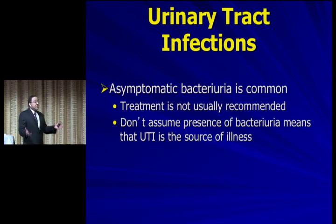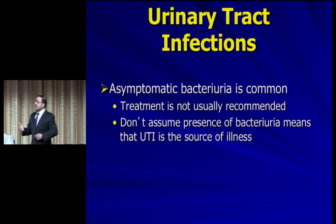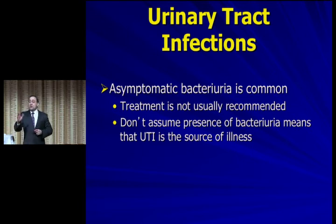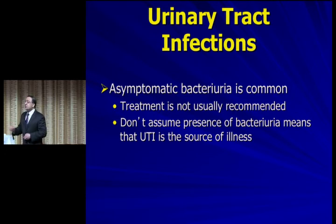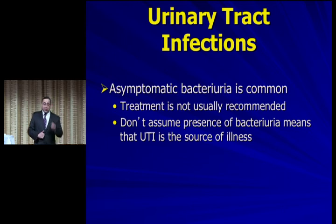Regarding asymptomatic bacteriuria: if you see bacteria but no white cells, or white cells but no bacteria, the literature suggests you don't need to treat it. If you see both bacteria and white cells, by all means treat. Lower your threshold — there shouldn't be any white cells in the urine if it's a clean specimen. If you have no epithelial cells on the sample, go ahead and treat if there's bacteria also. Otherwise those patients are at high risk for developing serious urinary infections.